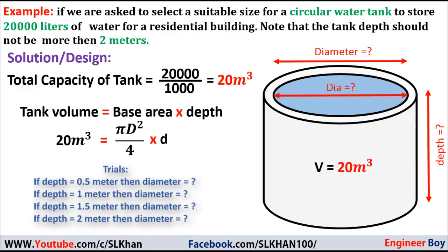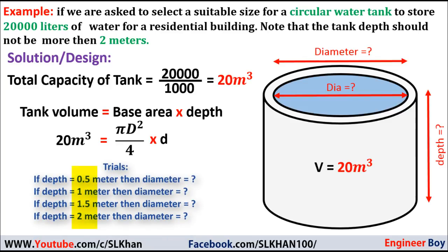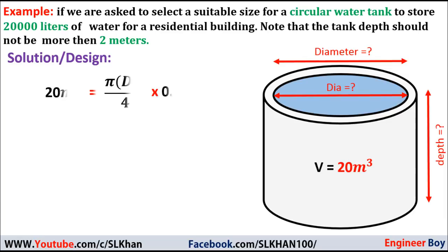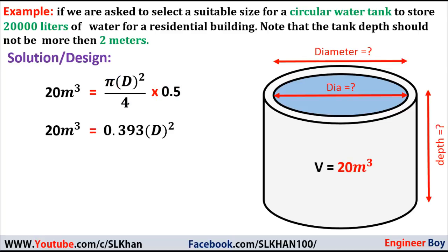Now, which depth do we use? We will try a few depths and analyze the resulting diameter for each to select a suitable size. Let's try for depth equals 0.5 meters: 20 = (π d²/4) × 0.5, which gives 20 = 0.393 d².